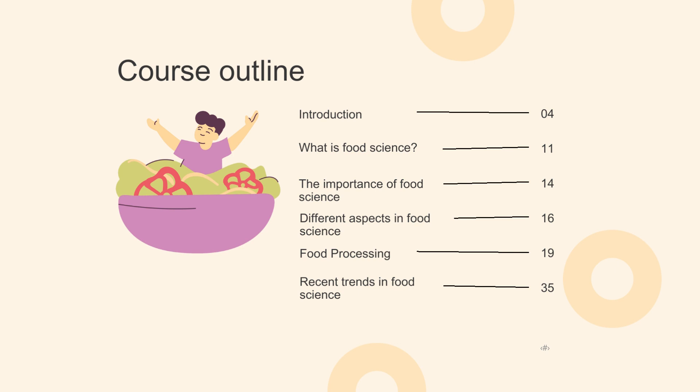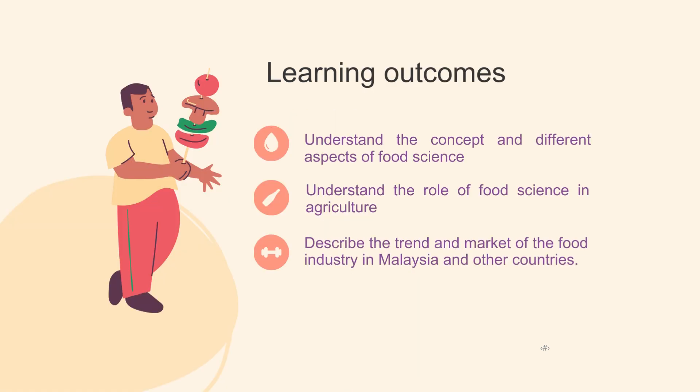At the end of this module, you will be assessed with a short assignment related to this module. Students are expected to understand the concept and different aspects, the role of food science in agriculture, and to describe the trend market of the food industry in Malaysia and other countries.